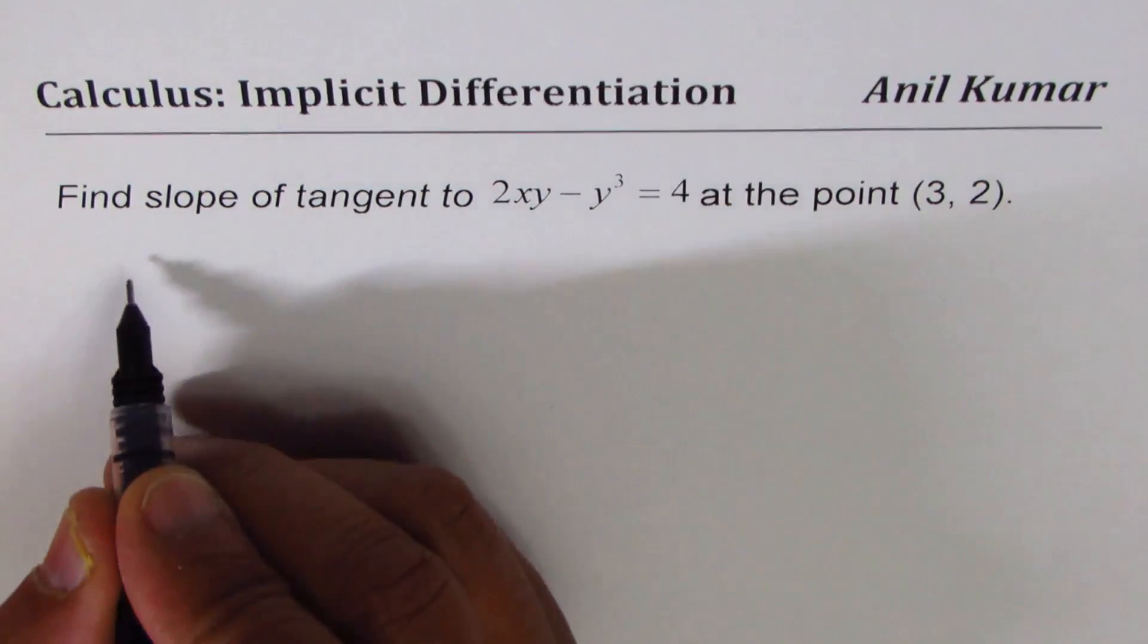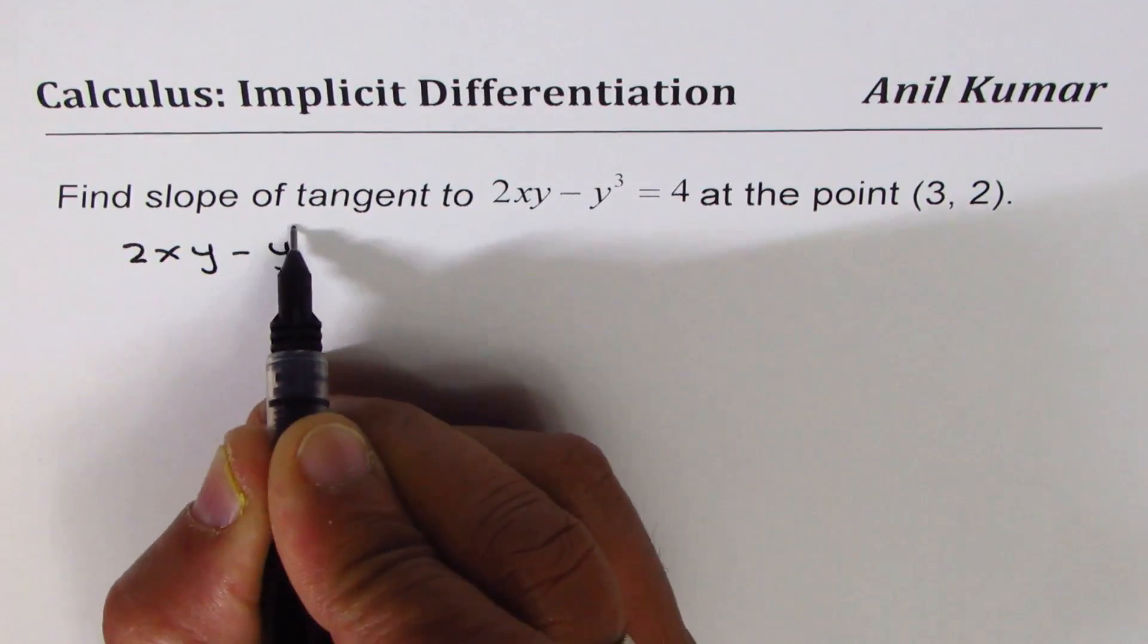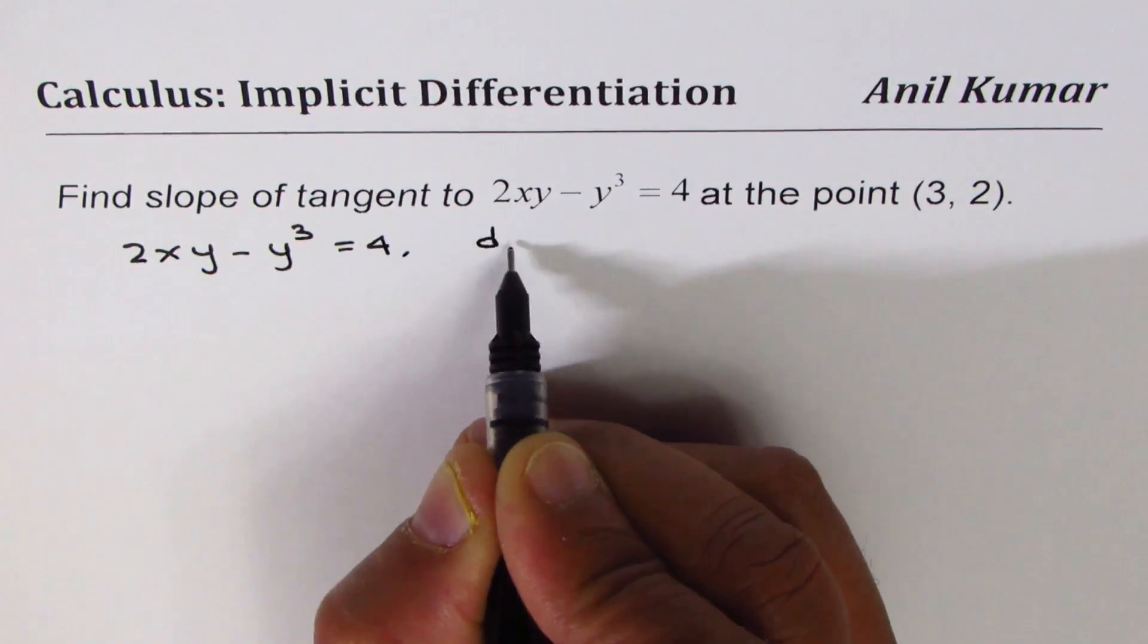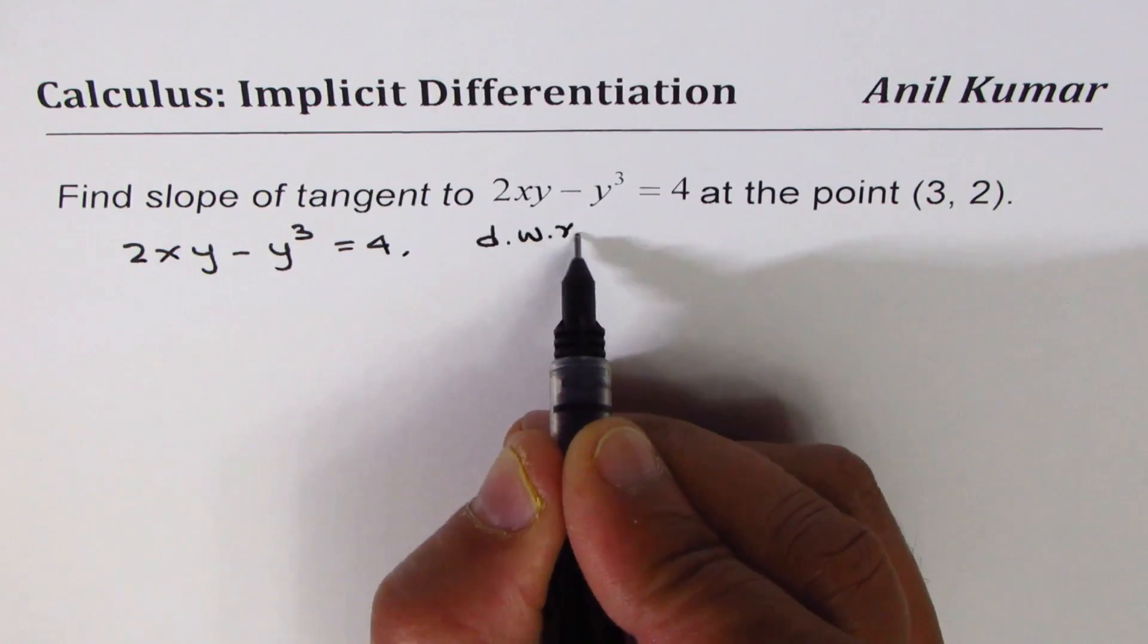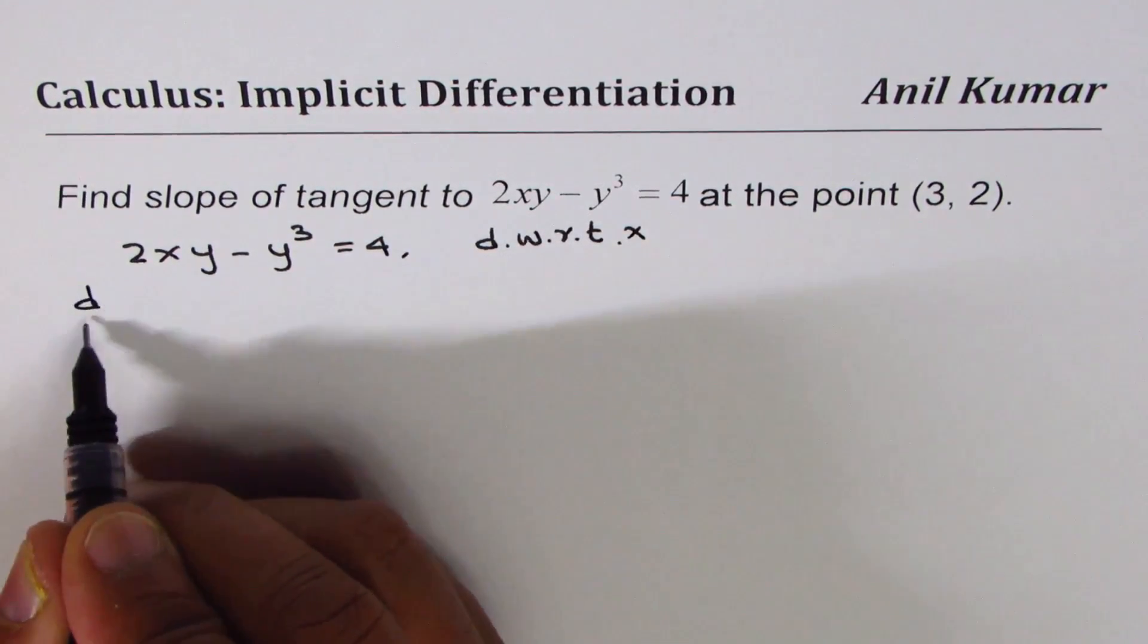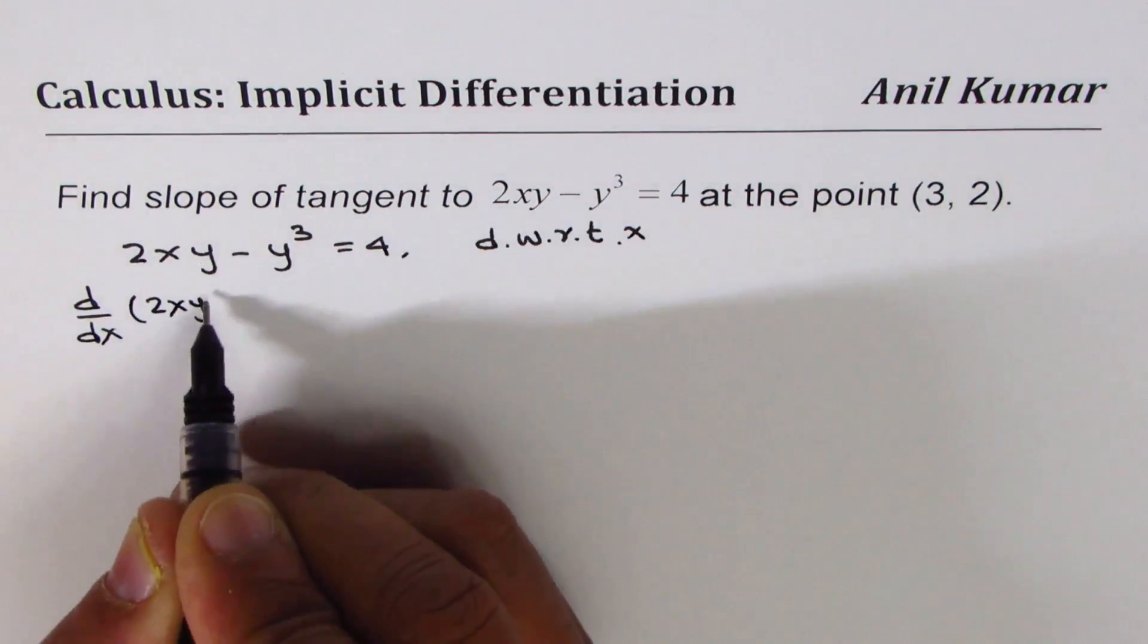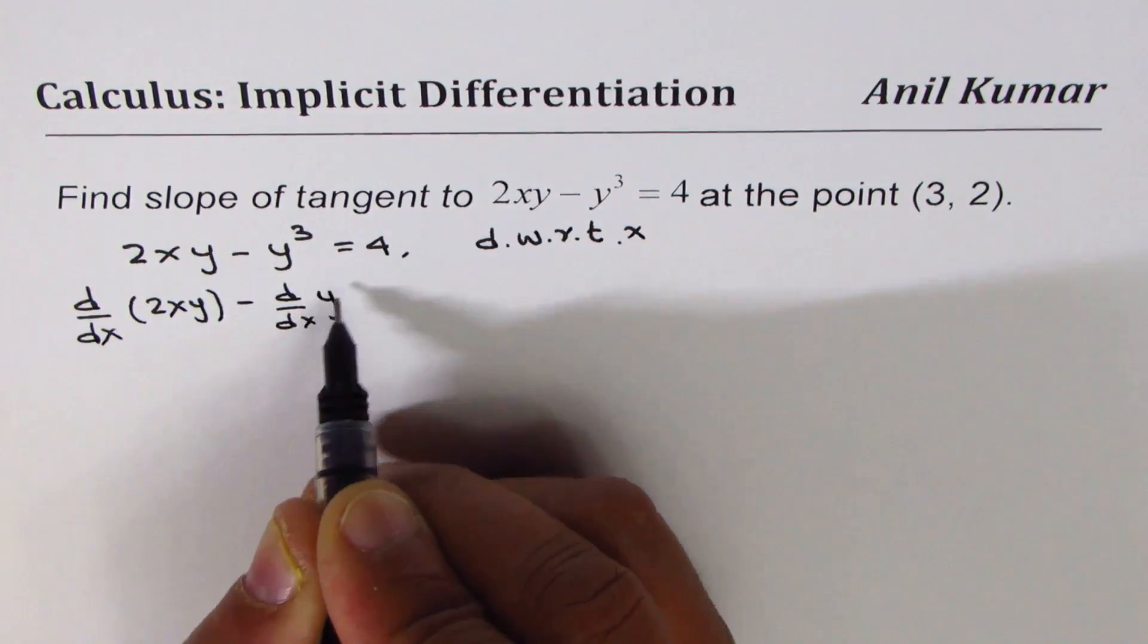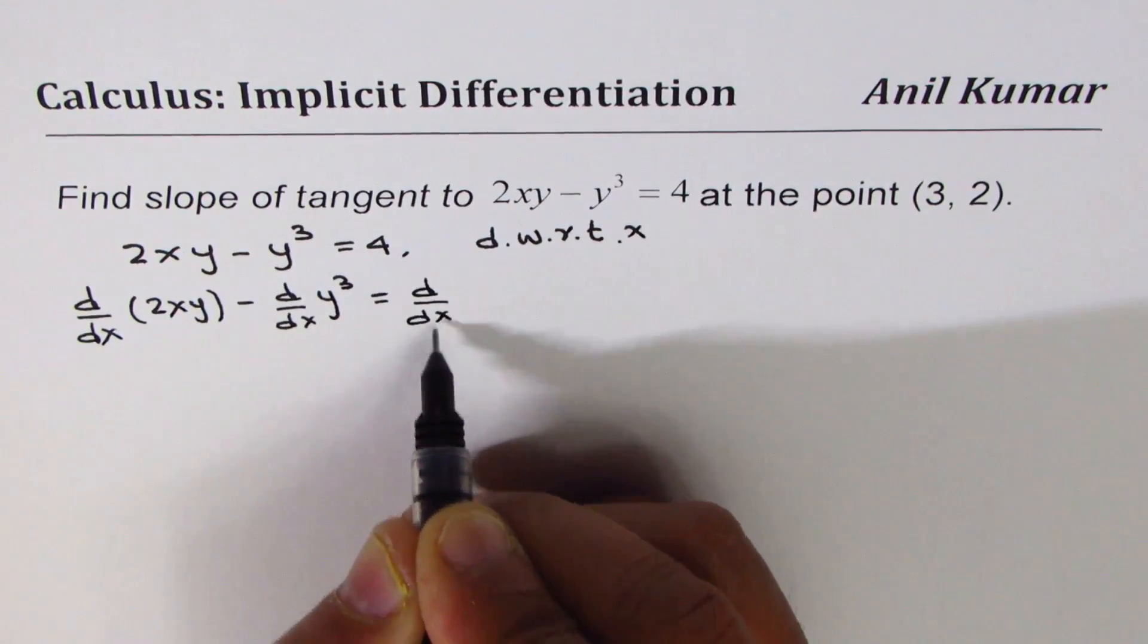We are given 2xy - y³ = 4. Let us differentiate both sides with respect to x. So we will do d/dx of 2xy minus d/dx of y³ equals d/dx of 4.